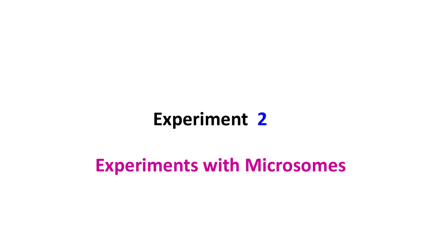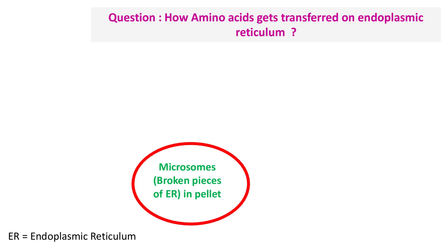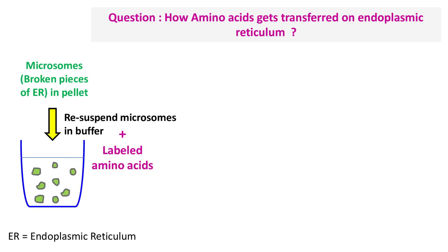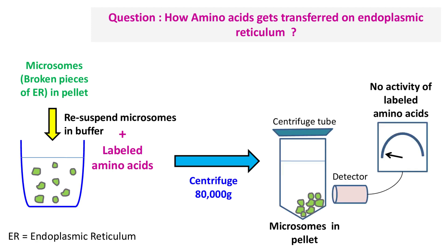For this, they used microsomes — broken pieces of endoplasmic reticulum formed during ultracentrifugation. When microsomes were treated with labeled amino acids, nothing happened. No activity was detected on the microsomes.